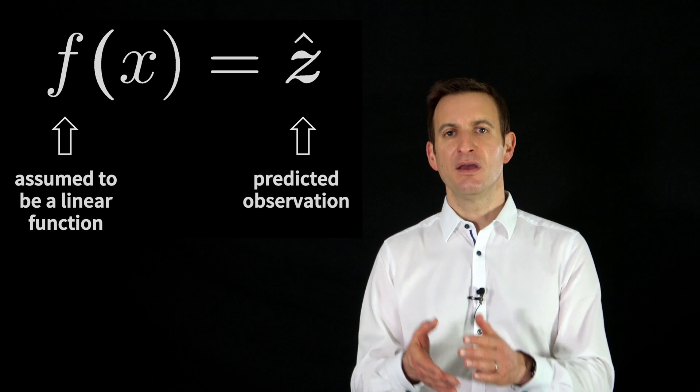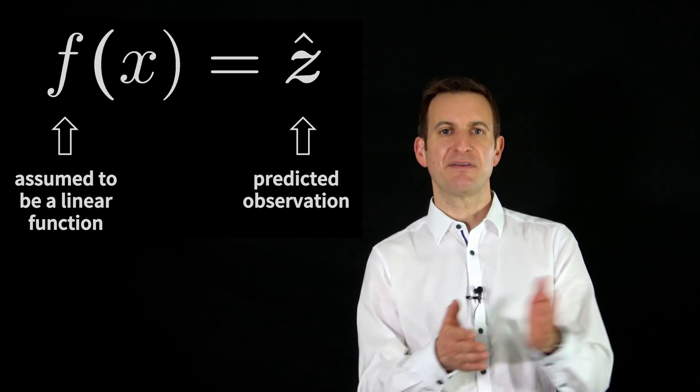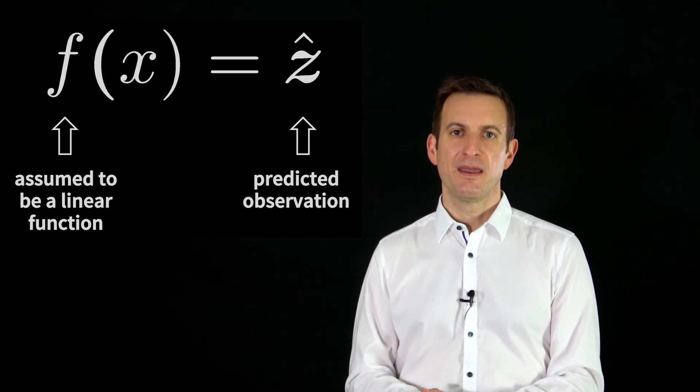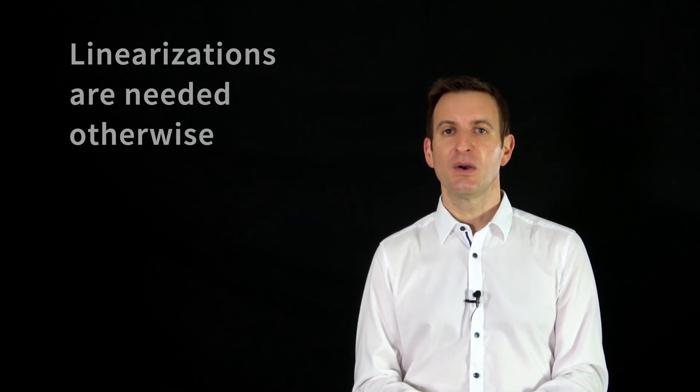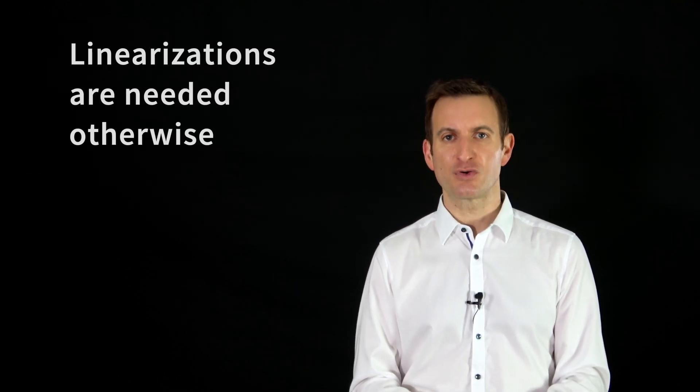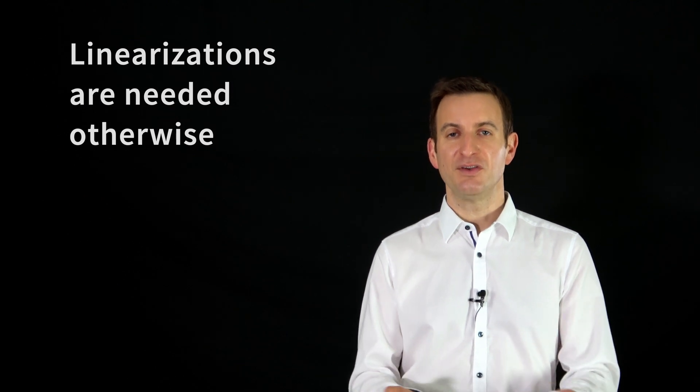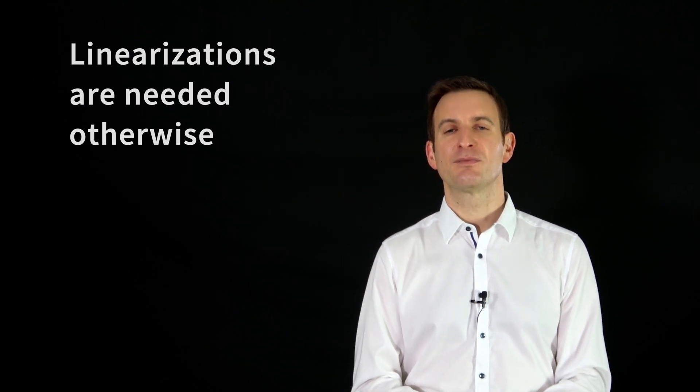What we assume in the least squares approach, at least in its basic form, is a linear dependency between the parameters that we have and those predicted observations. If there is no such linear dependency, we actually need to linearize our problem in order to solve it using the technique that Gauss has proposed.